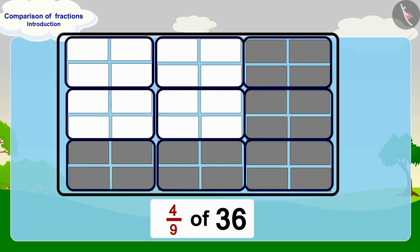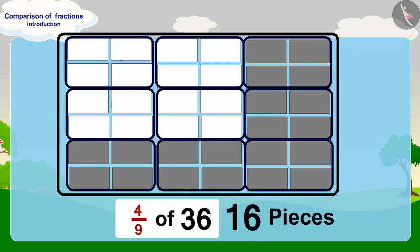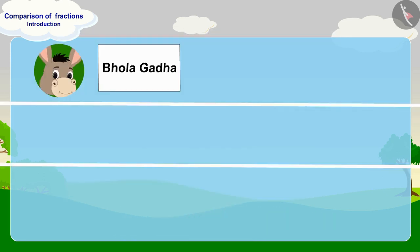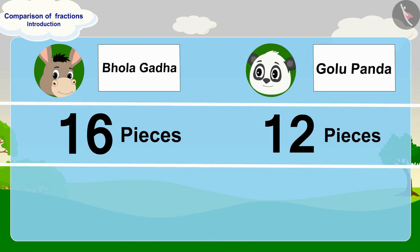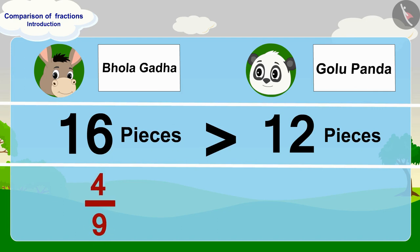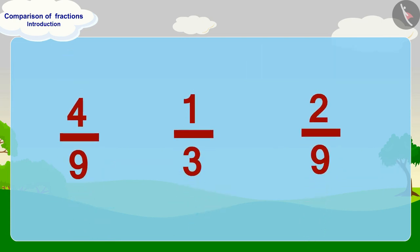There are four pieces of paper in one part of this fraction, so how many pieces will there be in four parts? Four times four is 16 pieces of paper. So four-ninth of 36 is 16. Bhola has written his name on 16 pieces of paper and Golu has written his name on 12 pieces of paper. Therefore, Bhola has written his name on more pieces of paper than Golu.